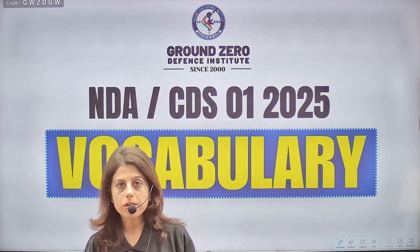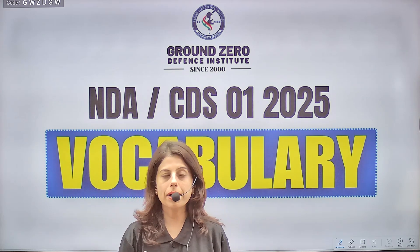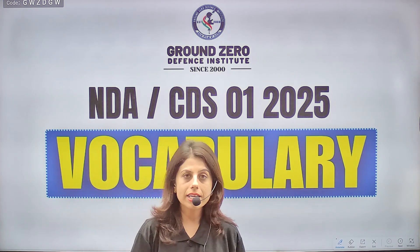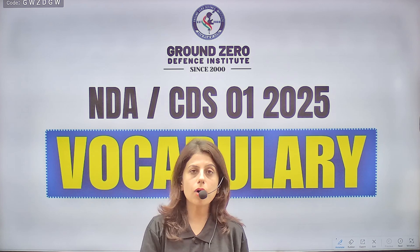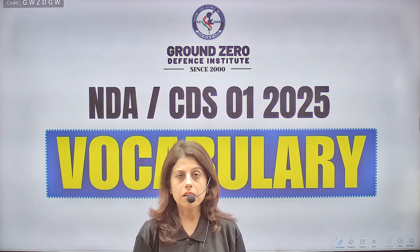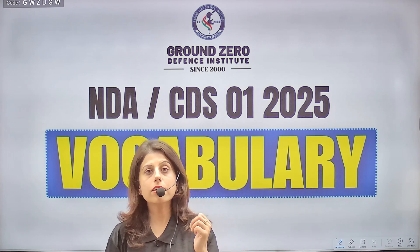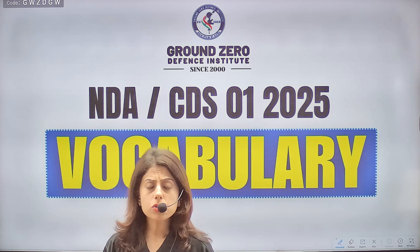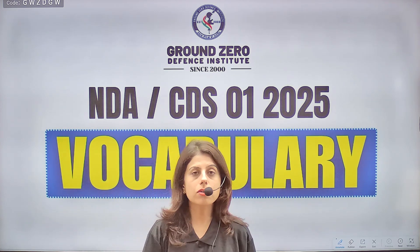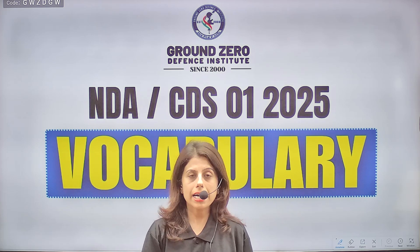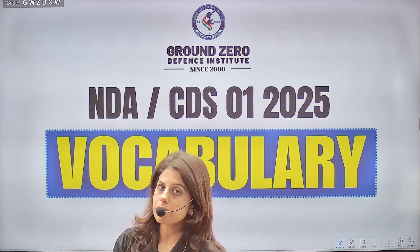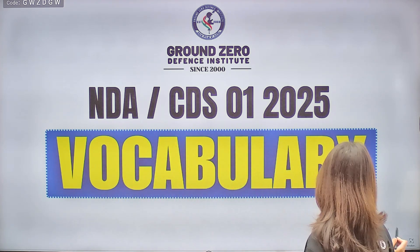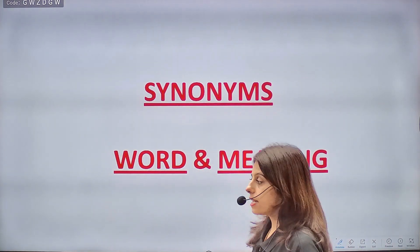In CDS, at least 50% of the paper comprises vocabulary, and in NDA it's more than 50% — 10 antonyms, 10 synonyms, and idioms are also part of vocabulary. Grammar section has reduced significantly. In every class I will discuss important words and their meanings, then show you how they appear in exam questions with options, and teach tricks like the elimination method and root words.